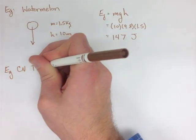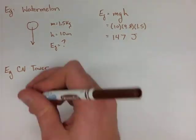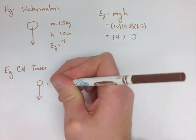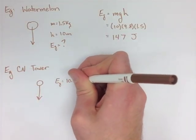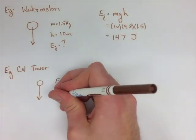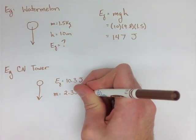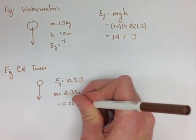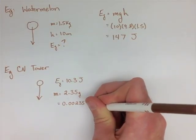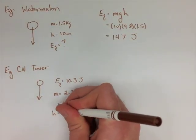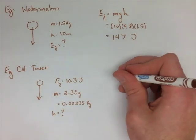The second one, we give you the energy dropping a penny from the top of the CN tower. We're asking you to find out how high is the CN tower. If it's got 10.3 joules of potential energy, and the penny is 2.35 grams, making it 0.00235 kilograms, what's the height?